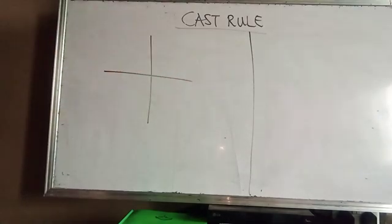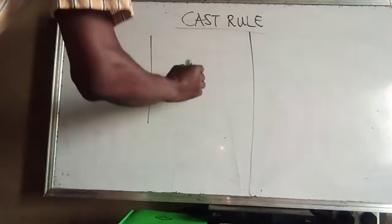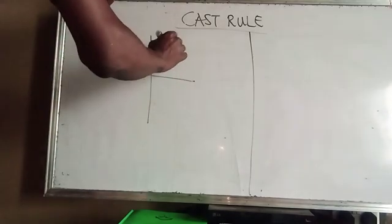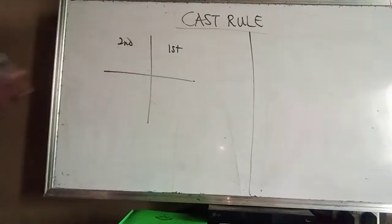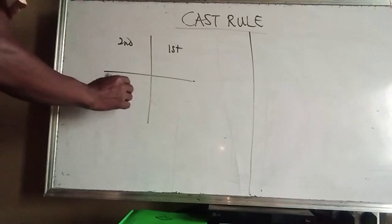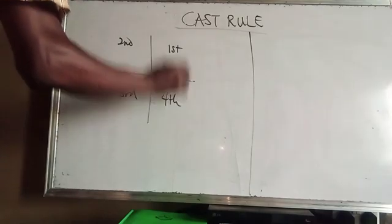A quadrant table. Now this is first quadrant. This is second quadrant because we are considering the geometry of an anti-clockwise movement. This is third quadrant and this is fourth quadrant.